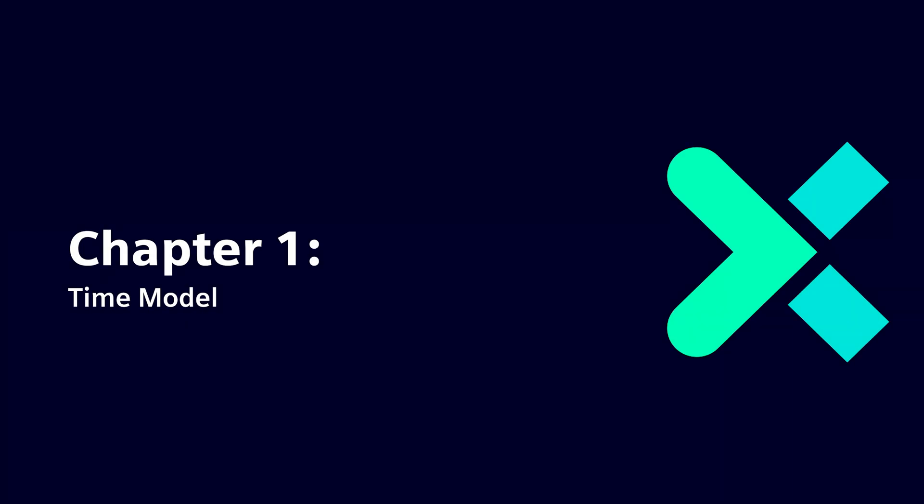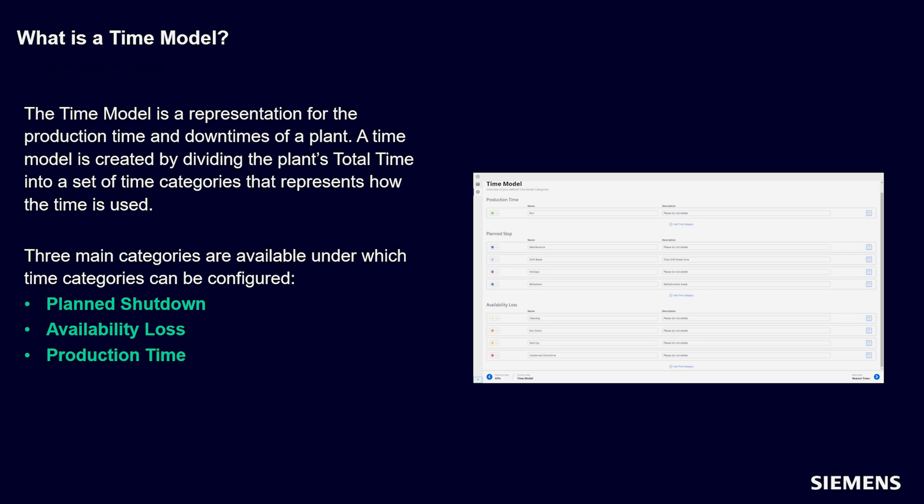Let's start with the time model. The time model is a virtual representation of time which always covers the total time. In essence, it represents the production time and the downtime — scheduled or unscheduled — of a plant. The time model is created by dividing the plant's total time into a set of time categories which represent how time is used. The time model is also heavily linked with the reason trees and the status mappings.